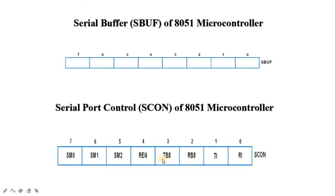TB8 is the transmitter bit 8, set or cleared by program in mode 2 or mode 3 operation. The 4th bit is REN (receive enable) — set to 1 to enable reception and cleared to 0 to disable reception. Bits 5, 6, and 7 are SM2, SM1, and SM0 — serial port mode selection. SM2 is the multiprocessor communication bit. It is set or cleared by program to enable multiprocessor communication in modes 2 and 3.